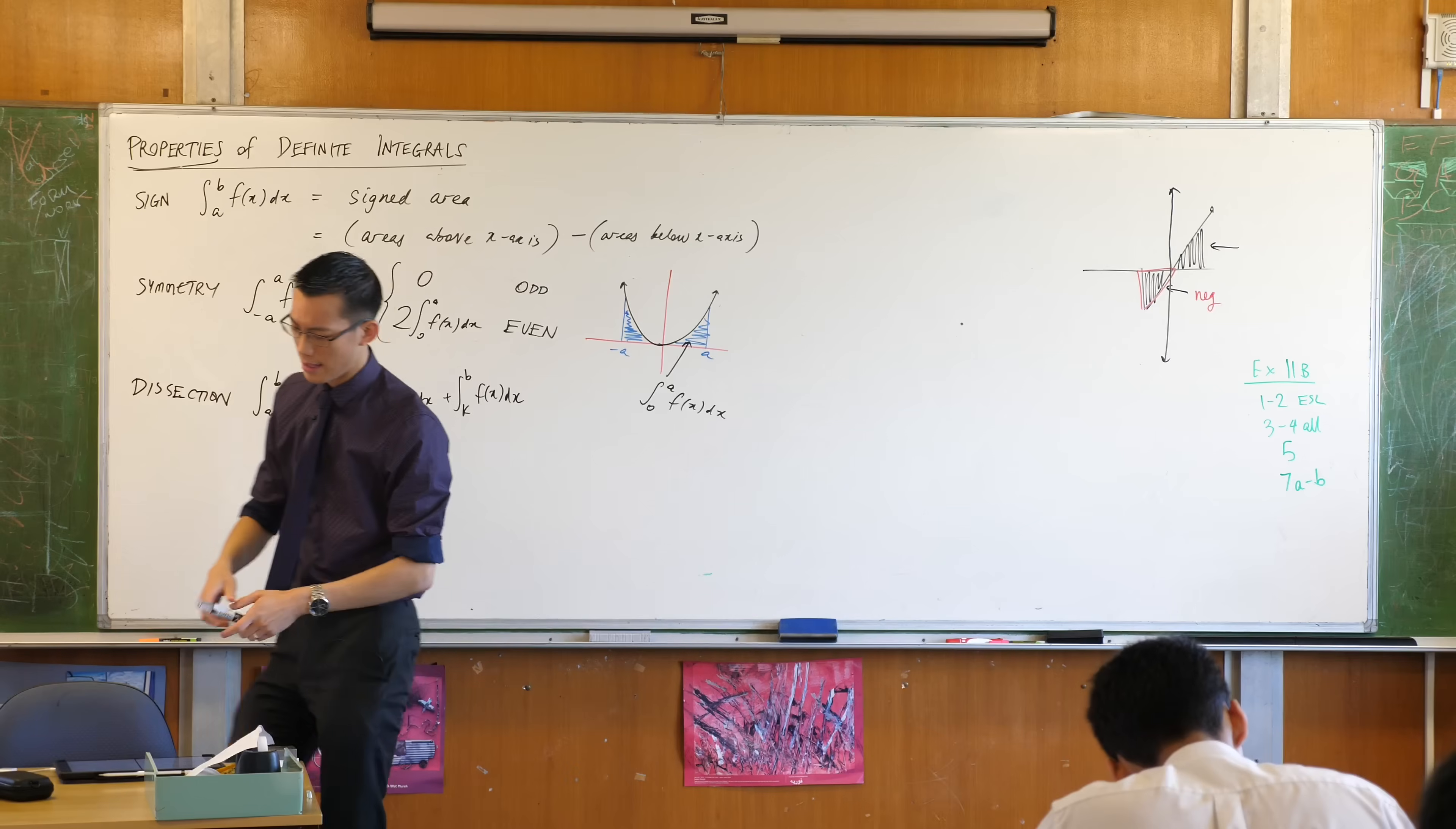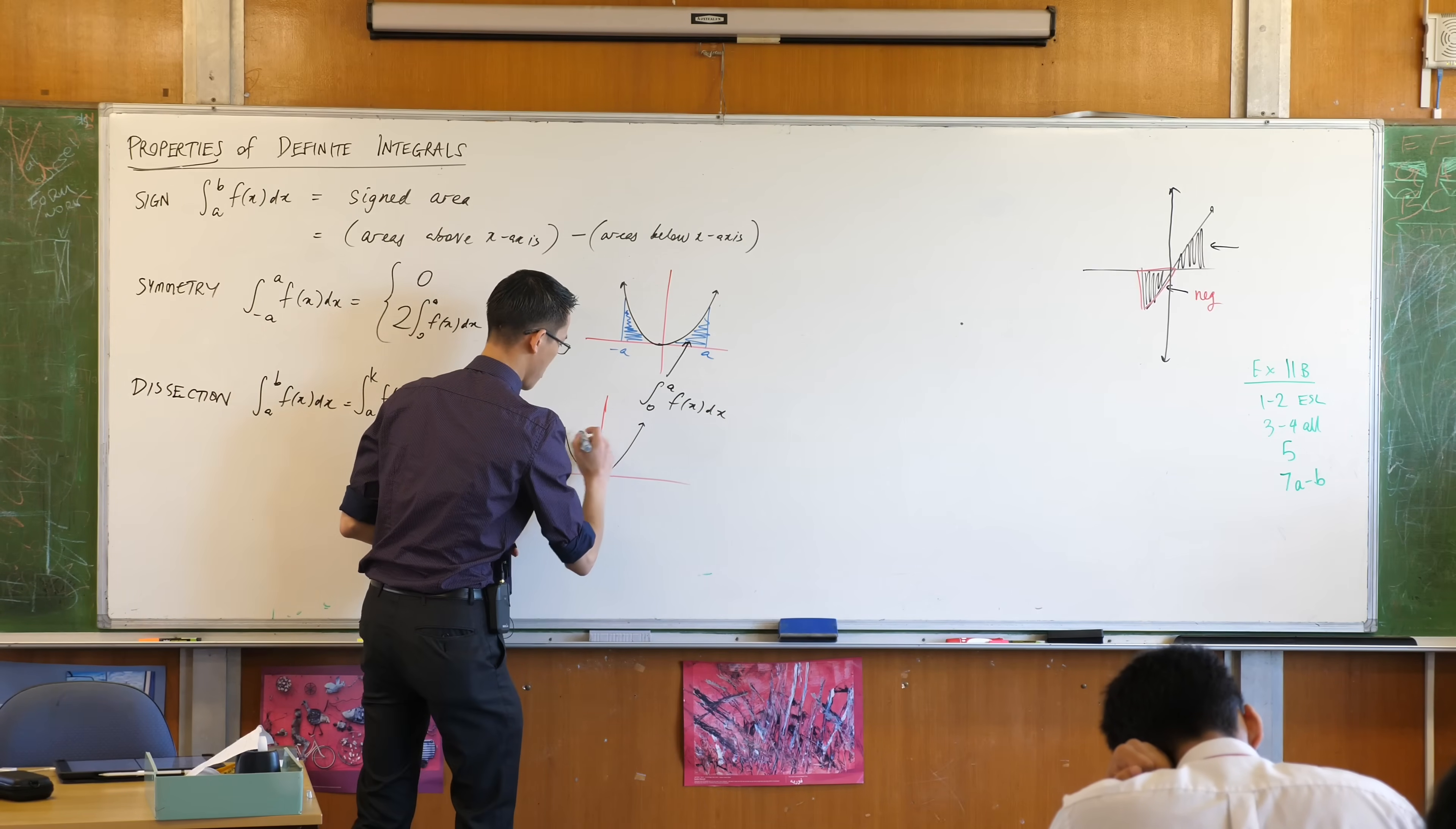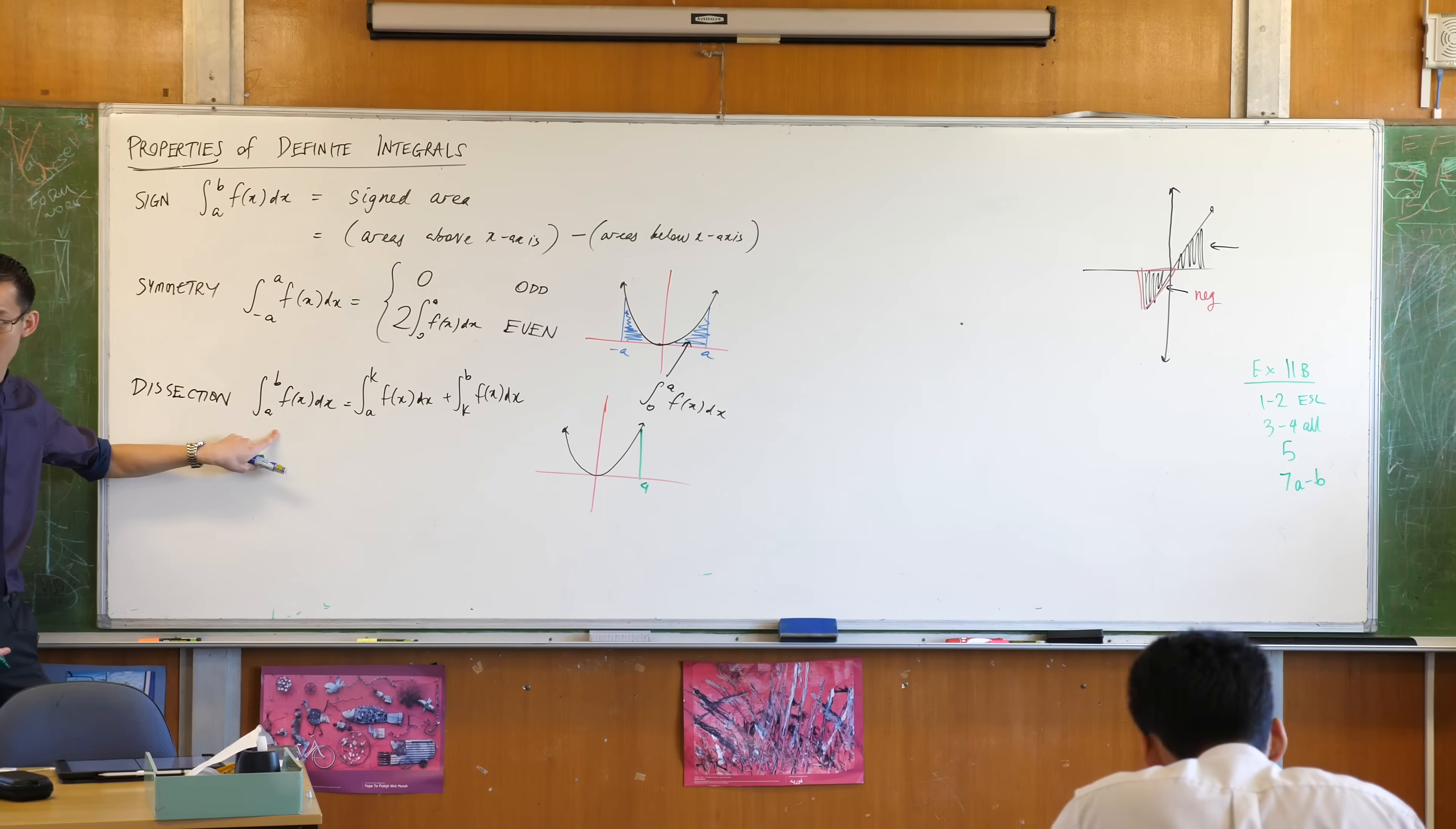So what would this look like? Let's just go with this x squared example that we just drew up over here. So if I said let's make a and b zero and four. If I went from zero to four, I could take this whole area, zero to four, and treat it as one integral like here on the left hand side.